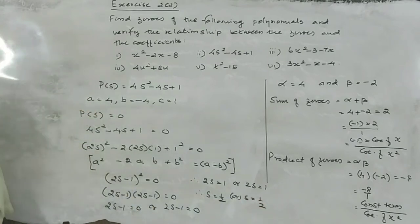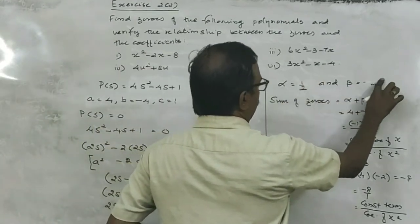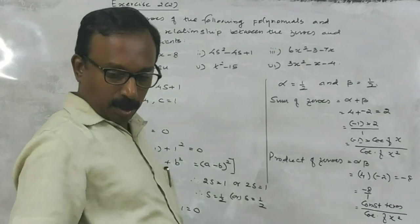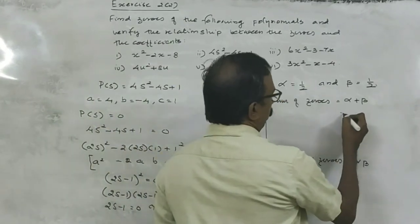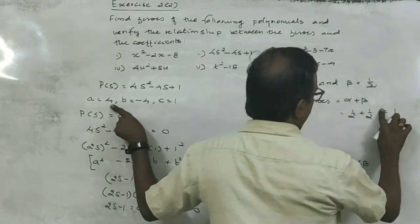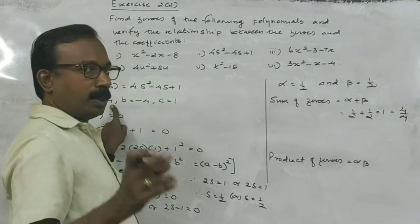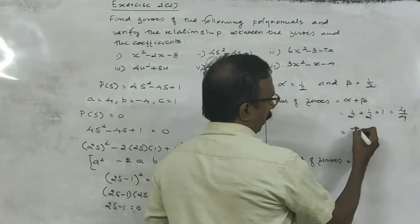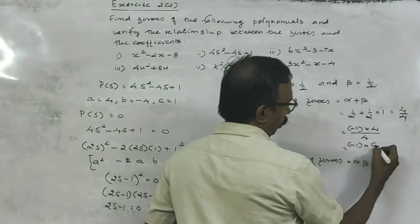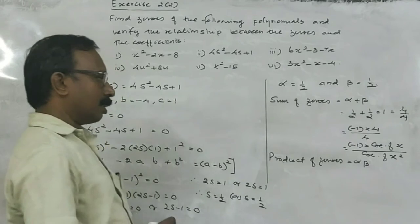Here the two zeros are the same. Alpha is equal to 1 by 2 and the second zero beta is also 1 by 2, isn't it? Now, sum of zeros: alpha plus beta is equal to 1 by 2 plus 1 by 2, that is 1. Here A is 4, so it is minus 1 into coefficient of x divided by coefficient of x squared — that is minus 1 into minus 4 divided by 4, which equals 1, isn't it?